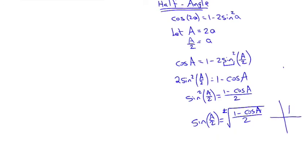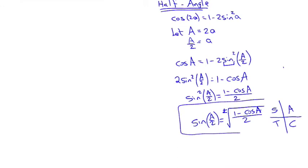Use the ASTC chart — all students take calculus — to determine the sign. If the half angle is in the top two quadrants, the answer is positive; if in the bottom two, it's negative. The formula doesn't tell you that — you have to determine it from the quadrant. For cosine of the half angle, it's the same formula but with one plus instead of one minus: plus or minus the square root of (1 plus cosine A) over 2.